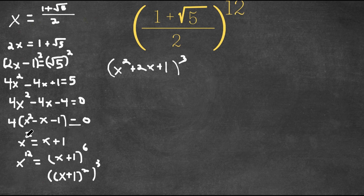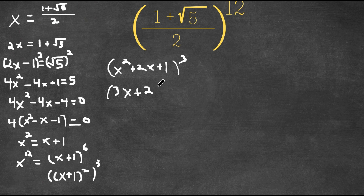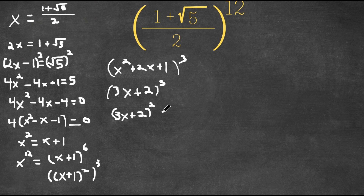Now, remember, we already defined x squared as x plus one. So if we plug in x plus one for x squared, and add all the like terms, we get three x plus two, to the power of three. This is equal to three x plus two squared, times three x plus two.